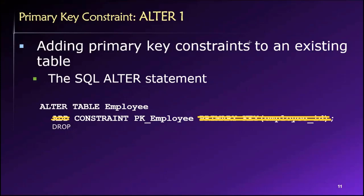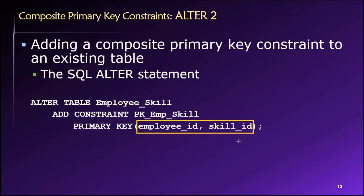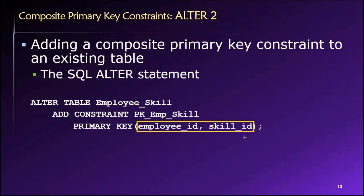However, if we just need to add a primary key to an existing table that does not have one, something like what you see here will do the job. If we want to add a composite primary key, it's exactly the same thing, except that we use a comma-separated list of the columns in the existing table that we would like to use as the primary key. In this case, we're creating a composite primary key that consists of employee ID and skill ID.